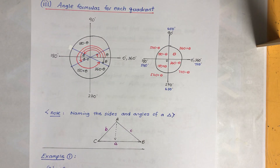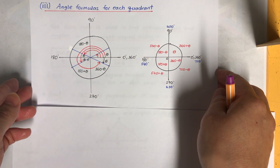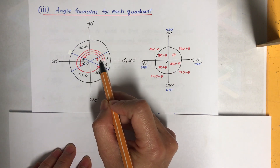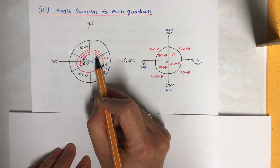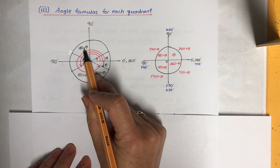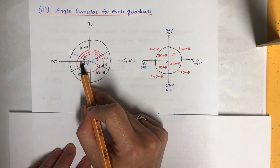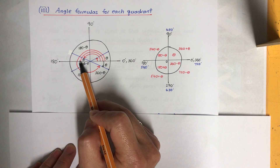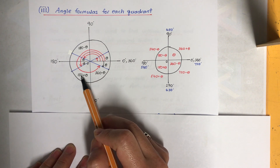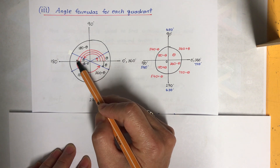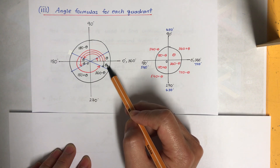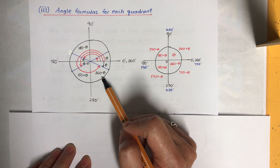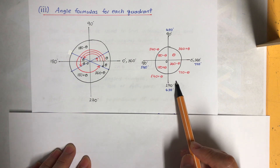Now let's look at part three: the angle formulas for each quadrant. The angle θ is measured from the x-axis. For the second quadrant it's (180° − θ). For the third quadrant, going up to 180° and adding a little θ gives (180° + θ). For the fourth quadrant, going all the way around with a little θ remaining gives (360° − θ).